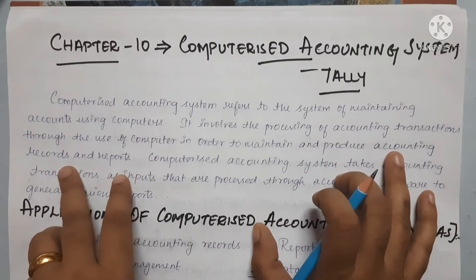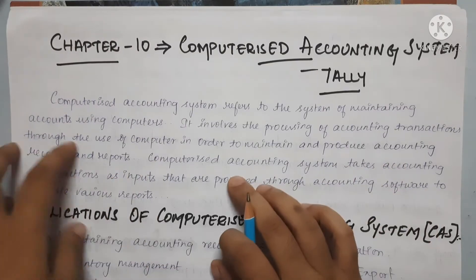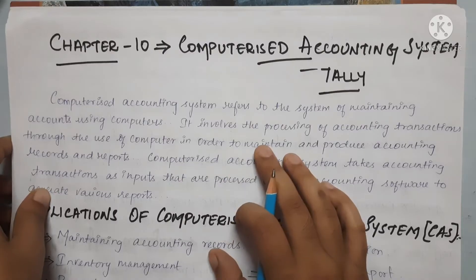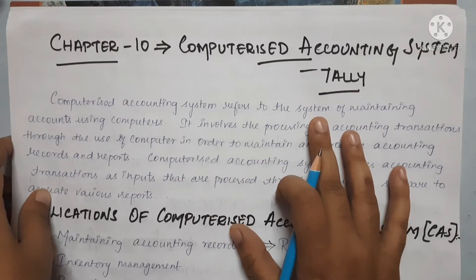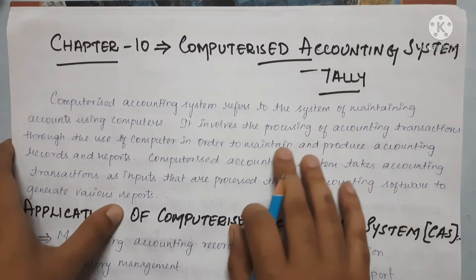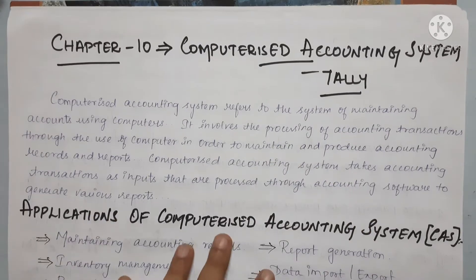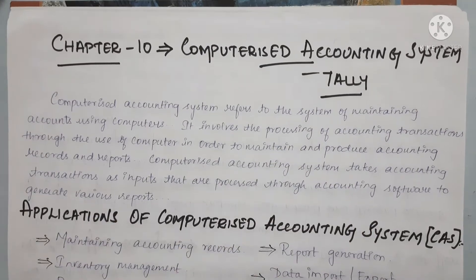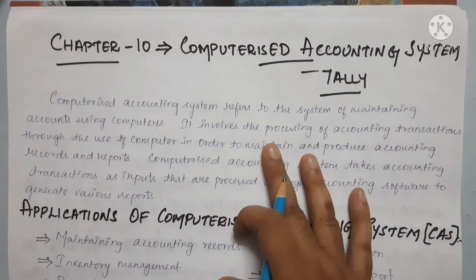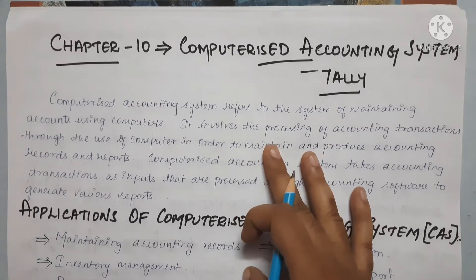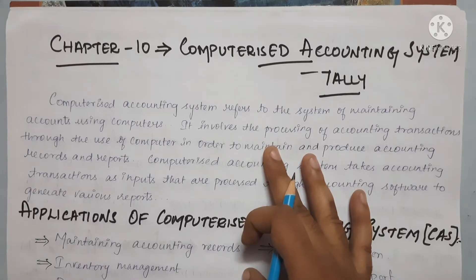It involves the processing of accounting transactions through the use of a computer, in order to maintain and produce accounting reports and records. It is a processing of accounting transactions — we can do it manually as well.